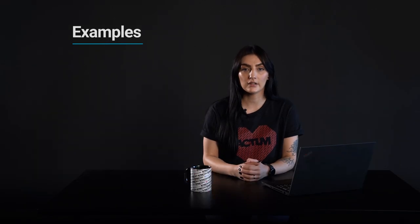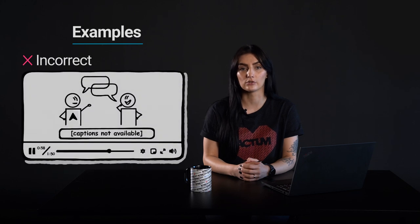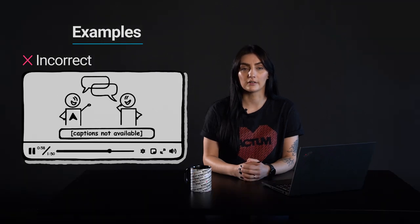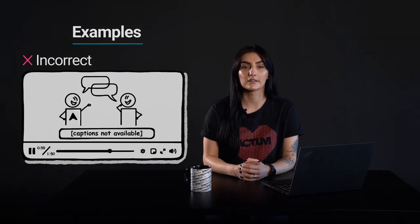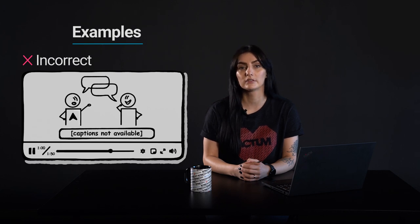The following example shows the incorrect usage or implementation of accessibility. Missing captions. A video picturing a dialogue between two people. The dialogue is an essential part of the video and because there are no available captions, users who rely on captions completely miss important auditory information.